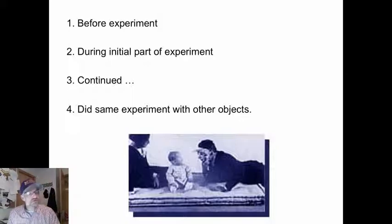During the initial part of the experiment, Albert saw the rat and reached for it, and as soon as he touched it, a researcher would run up behind him and hit a large steel bar with a hammer. Of course, Albert was frightened and cried and fell forward.